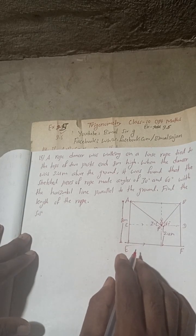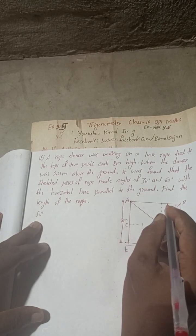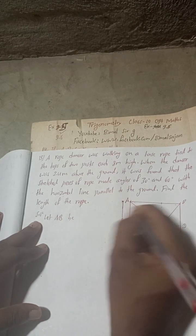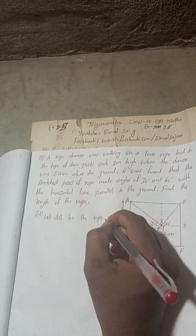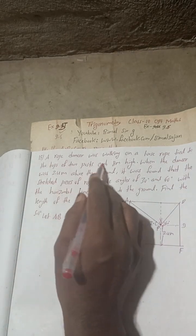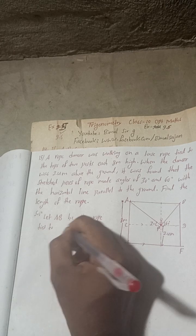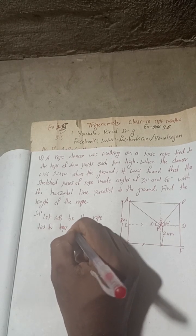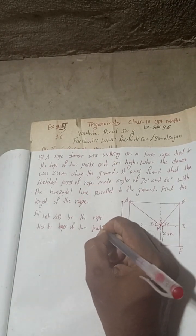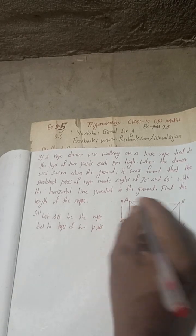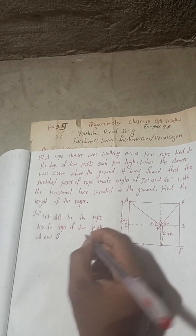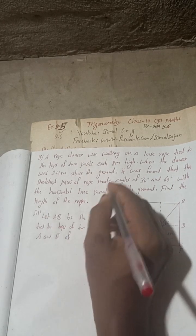Let AB be the rope tied to the tops of two posts. Let A and B be the tops of the two posts, each of height 8 meters.